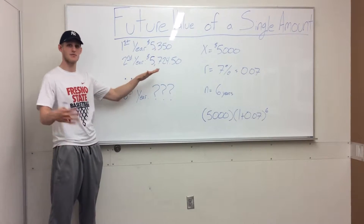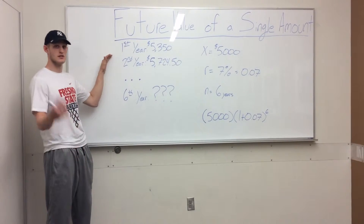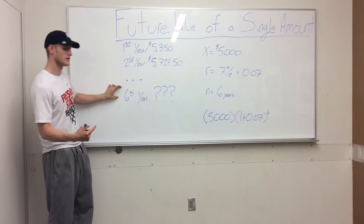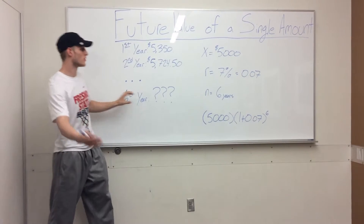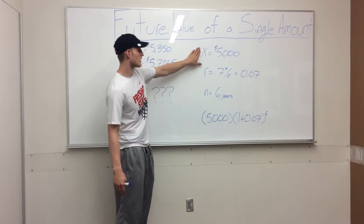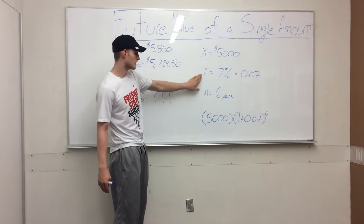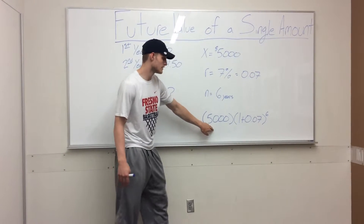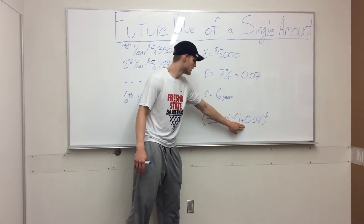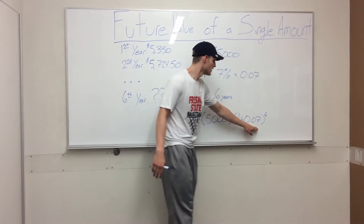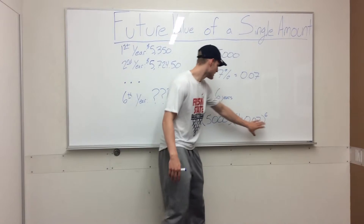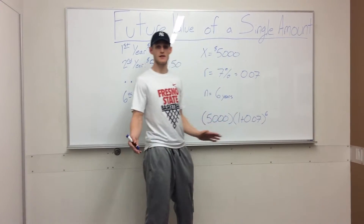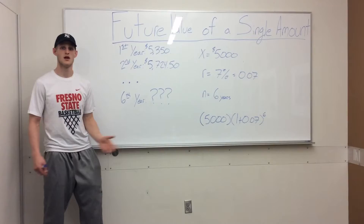Instead of doing the same long process for each year — first period through sixth period — we're going to use the formula. Using our initial investment, rate of return, and the number of periods — which is now six years — we're going to do $5,000 times the quantity one plus the rate of return to the sixth power. But instead of doing all this complicated math, we can refer to a table called the future value of a single amount table.